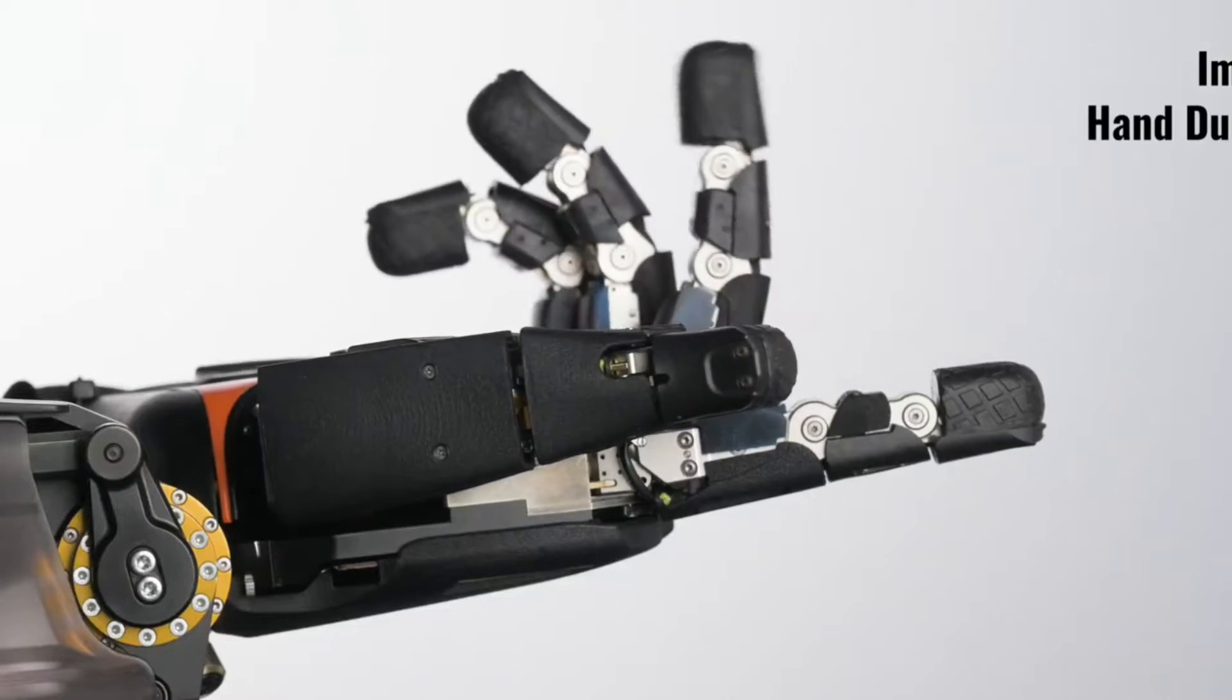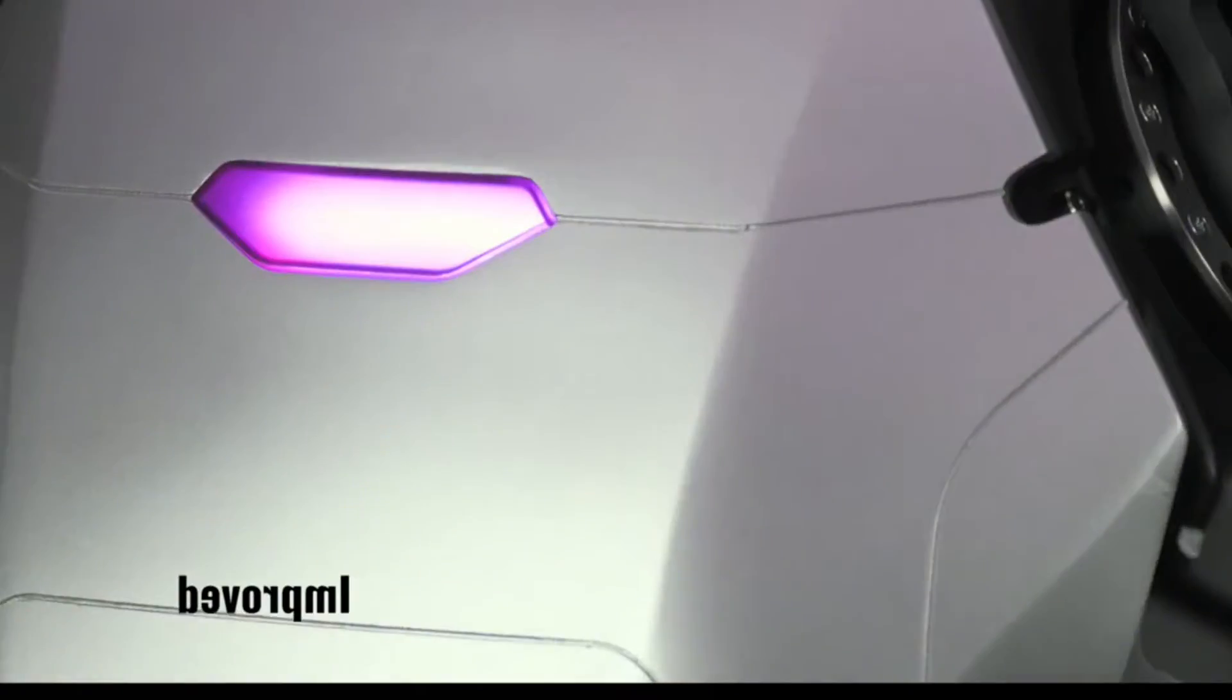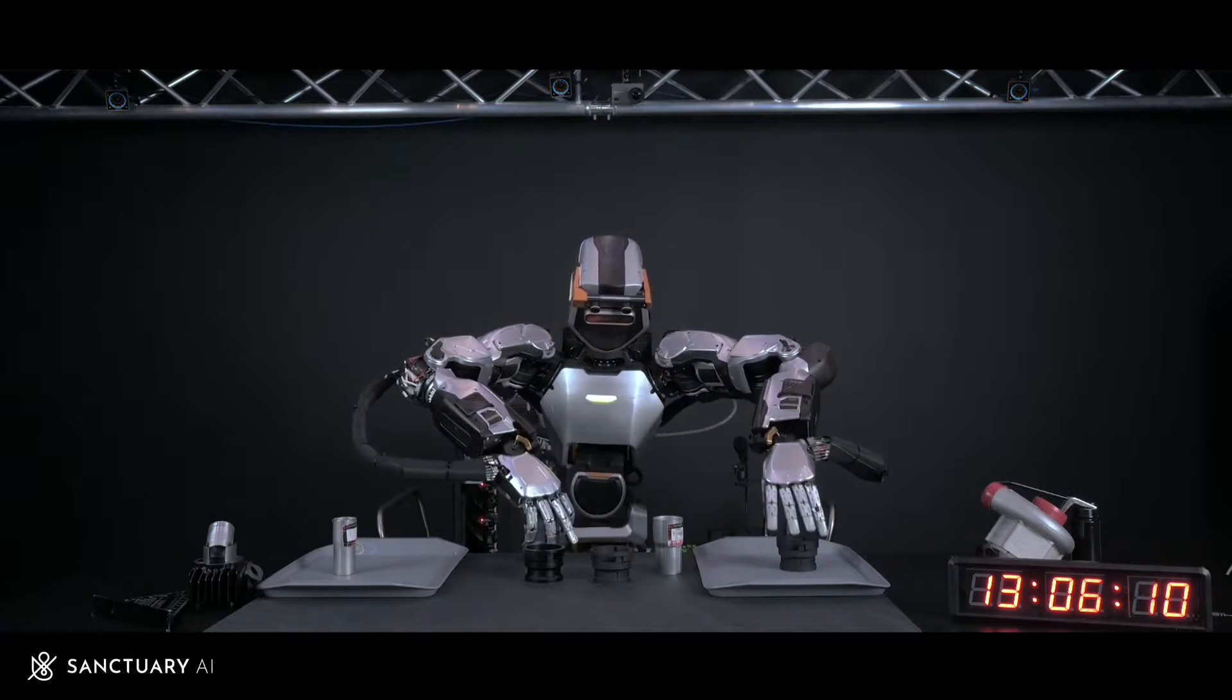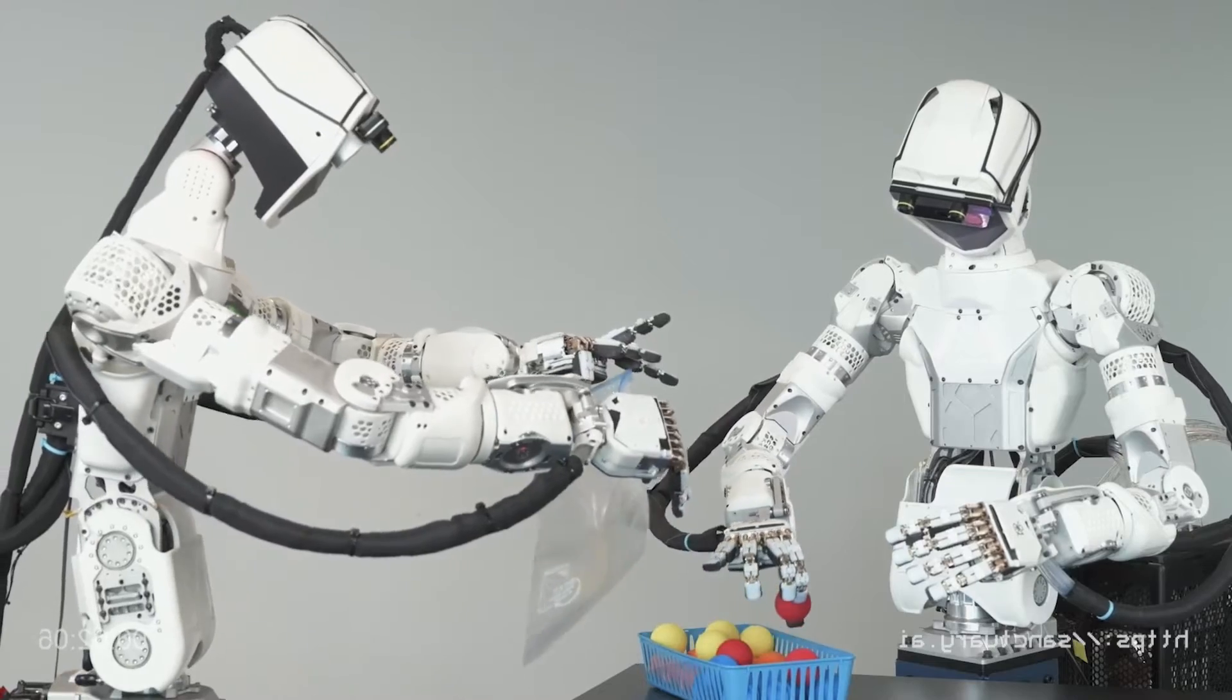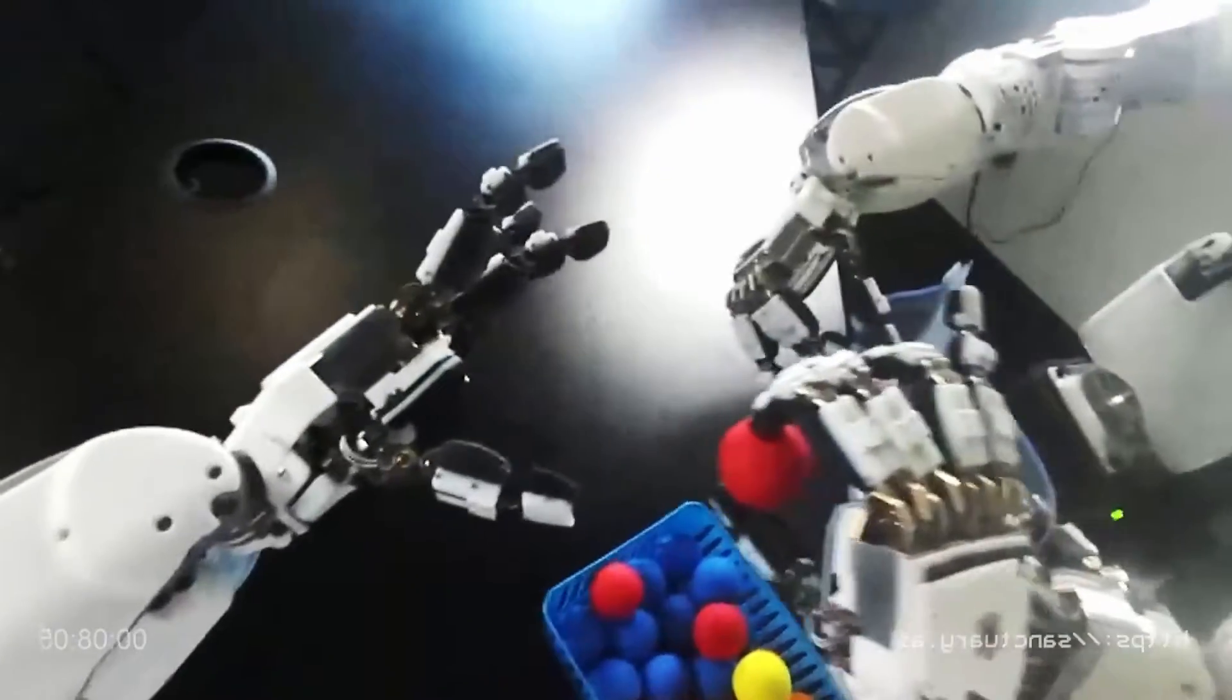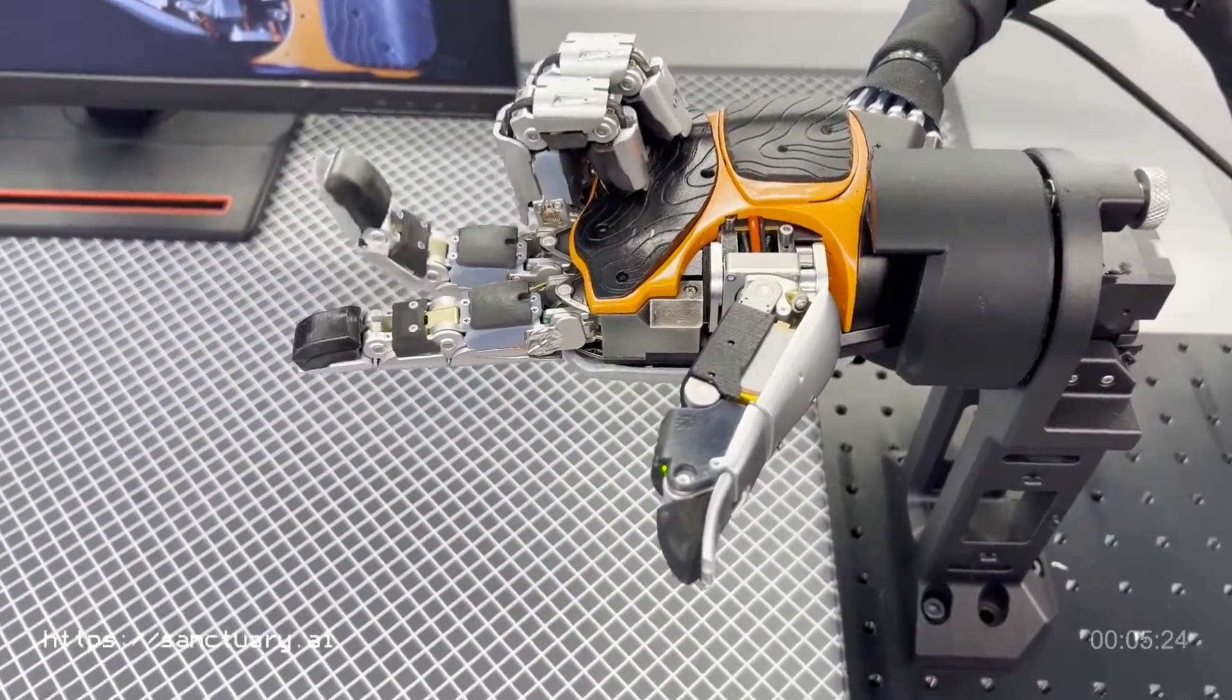The previous generations of the Phoenix robot have set a high bar for what humanoid robots can achieve. They were designed to be sensor-rich and physically capable, standing at 5 feet 7 inches and weighing 155 pounds, with a maximum payload of 55 pounds and a maximum speed of 3 miles per hour. Their industry-leading robotic hands boasted increased degrees of freedom, rivaling human hand dexterity and fine manipulation.